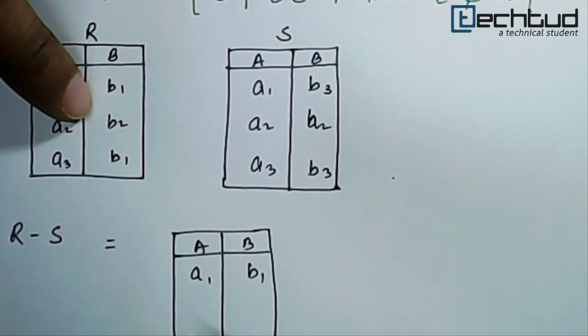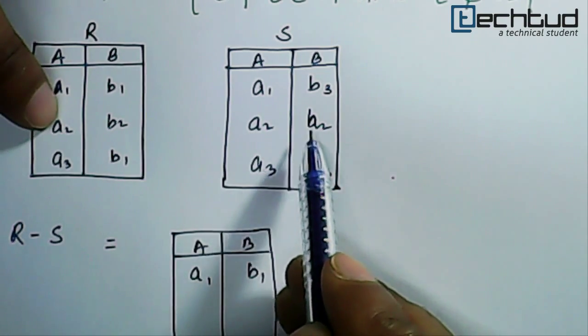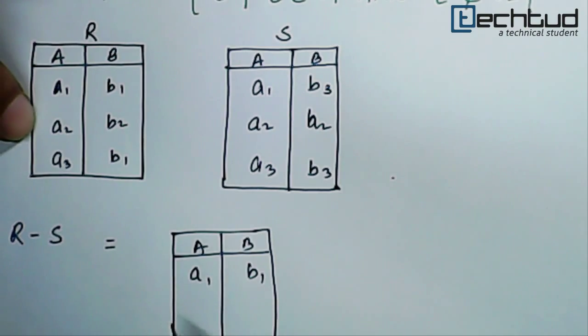A2 B2 if you see it is present here and it also present here right. It is present in both the relations. So we will not write it.